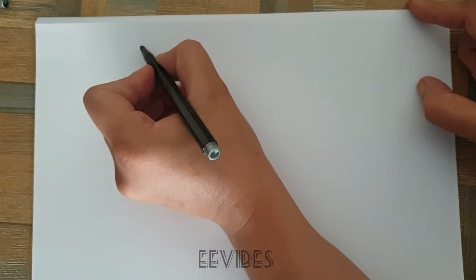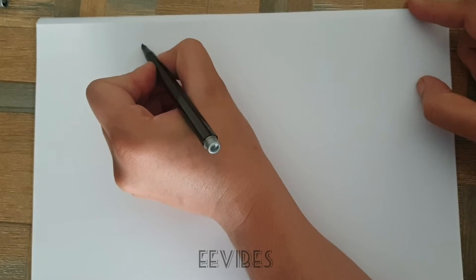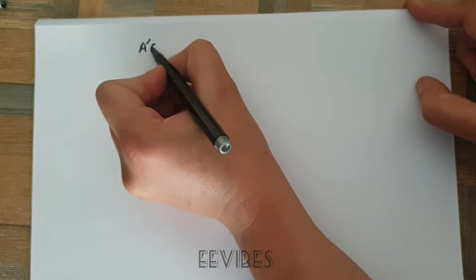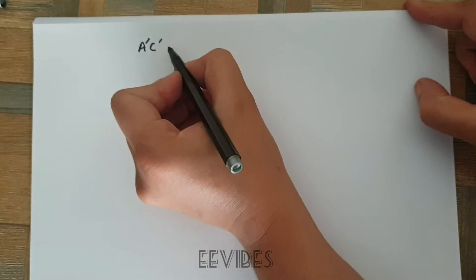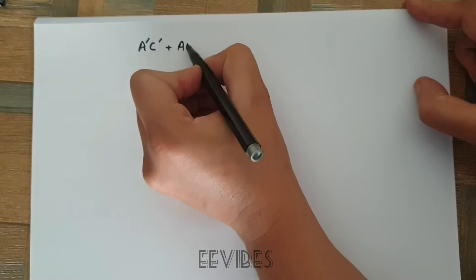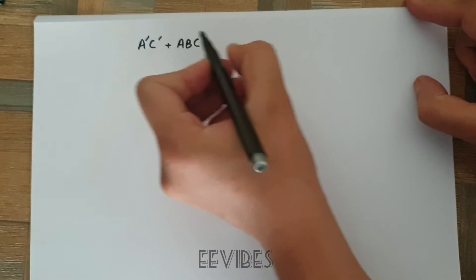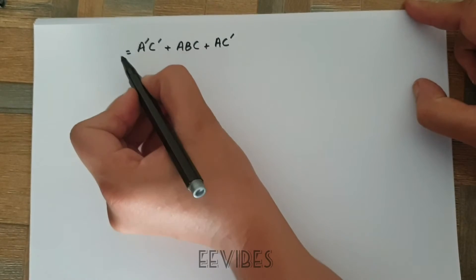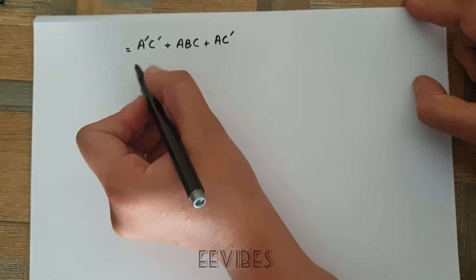Let's start with the end problem part A, 2.4. You are given the expression A complement C complement plus ABC plus AC complement, and you have to simplify this Boolean expression up to 3 literals.